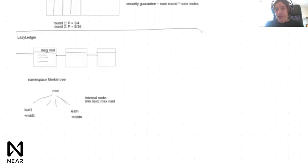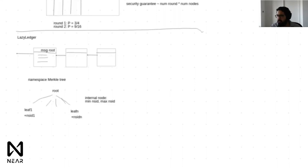In lazy ledger, rolling back based on one virtual sidechain having an invalid state transition is not easily implementable unless those shards agree in advance on shared security. Unlike sidechains, if virtual applications on lazy ledger use it as a data availability layer, you're guaranteed that data is available and fraud proofs can always be made. Cosmos zones can optionally post their blocks to lazy ledger to share security. Lazy ledger doesn't have to worry about rollbacks — that's determined entirely by the virtual sidechains.